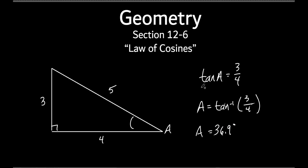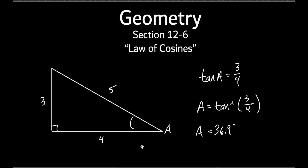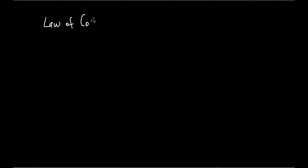So that's old stuff. But what if you did not have a right triangle? What if you had a triangle that was not a right angle? Well, you've got to have something else. And I'm not going to show you the history of this. I'll give it to you — it's a thing called the law of cosines.